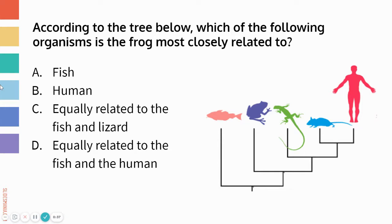So this is a practice question: according to the tree below, which of the following organisms is the frog most closely related to? Your options are fish, human, equally related to the fish and the lizard, or equally related to the fish and the human. Take a minute, pause this video, and decide what you think the answer is.